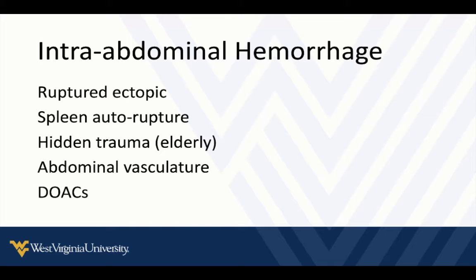Less common but important: at some point we're all going to see patients with spontaneous intra-abdominal or abdominal vasculature abnormalities that can rupture — celiac artery aneurysms, splenic artery aneurysms, mesenteric artery aneurysms and ruptures, erosions. Not common, but point-of-care ultrasound can help you pick these up very quickly rather than running down the wrong path. Direct oral anticoagulants may lead to other spontaneous intra-abdominal hemorrhage or have been linked to incidents of splenic auto-rupture. Those are some of the scenarios where you're going to see these findings.